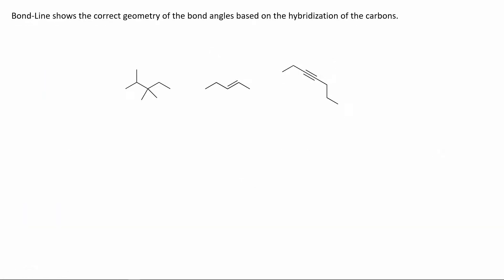The bond line formula has all of the carbons summarized as either endpoints or turns on the structure, and all of the hydrogens are implied. One useful piece of information shown in the bond line formula is the hybridization of the carbons based on their geometry. On the left molecule, all carbons are sp3 with 109.5 degree bond angles. The second molecule has an alkene with two sp2 hybridized carbons at 120 degrees. The third molecule has an alkyne with a triple bond, where those two carbons are sp hybridized with bond angles of 180 degrees.